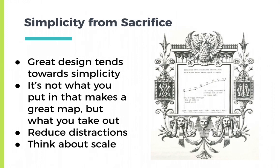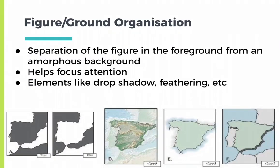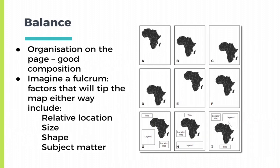Do keep in mind that you must show some context. Think also about how you can visually separate a figure in the foreground from an amorphous background — it helps to focus attention. You can add different elements such as a drop shadow or feathering. Examples A and B are poor regarding contrast and color choice; better are D, E, and F. Try to balance your figure in the center of the page and leave room for a legend, title, scale, and north arrow. A good map can be a visual argument — try to evenly distribute the information around the map while leaving the map itself in the middle.